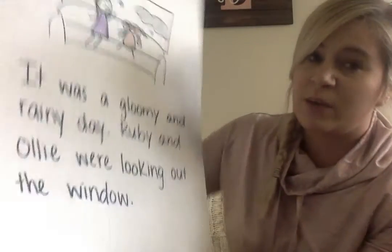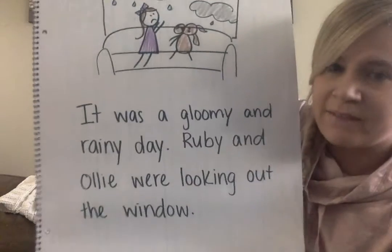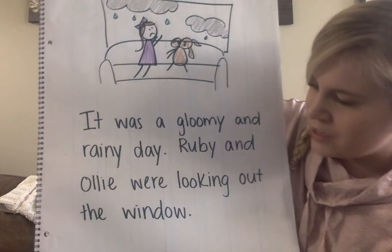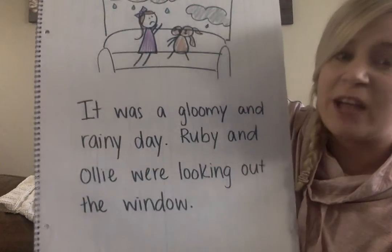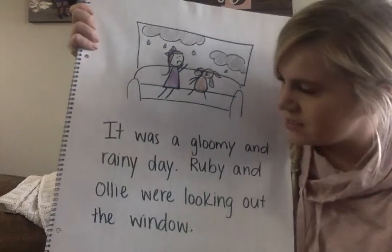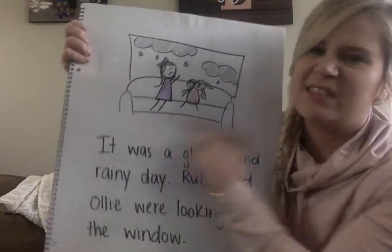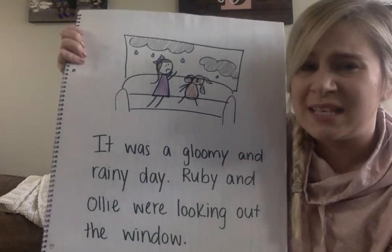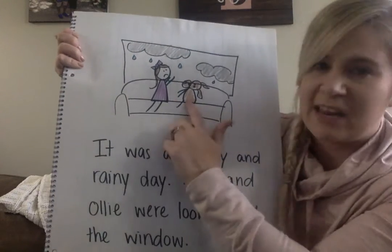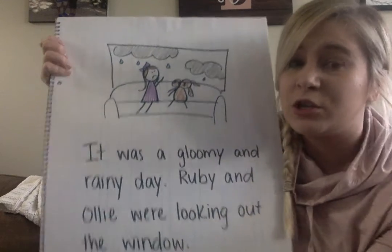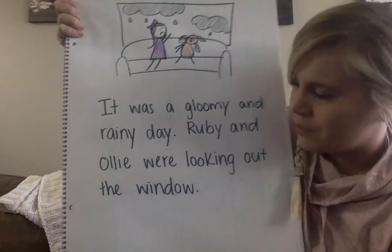I started doing my writing and just rewrote my first page that we already wrote together at school. I have: 'It was a gloomy and rainy day. Ruby and Ollie were looking out the window.' On your first page, it's a good idea to tell the setting — I told the weather, it's gloomy and rainy. I showed they're inside the house looking out the window sitting on the couch. You also want to introduce your characters, and then you don't want to say immediately what the problem is — you want to slow it down and keep it exciting.